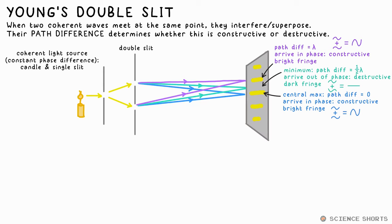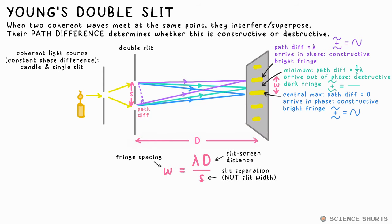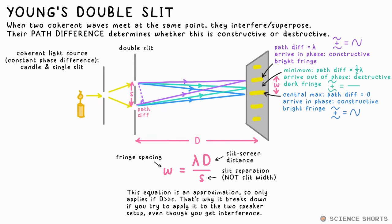Young's double slit equation is this: W equals lambda D over S, where W is the fringe spacing. That's the distance between the centre of two bright fringes or two dark fringes, for example. D is the slit to screen distance and S is the slit separation. Note that that isn't slit width. Changing the actual width of the slits doesn't change the fringe width at all. However, this equation is an approximation and it can only be used when the screen distance is much, much larger than the slit separation. That's why the equation is likely to break down when we use sound instead.